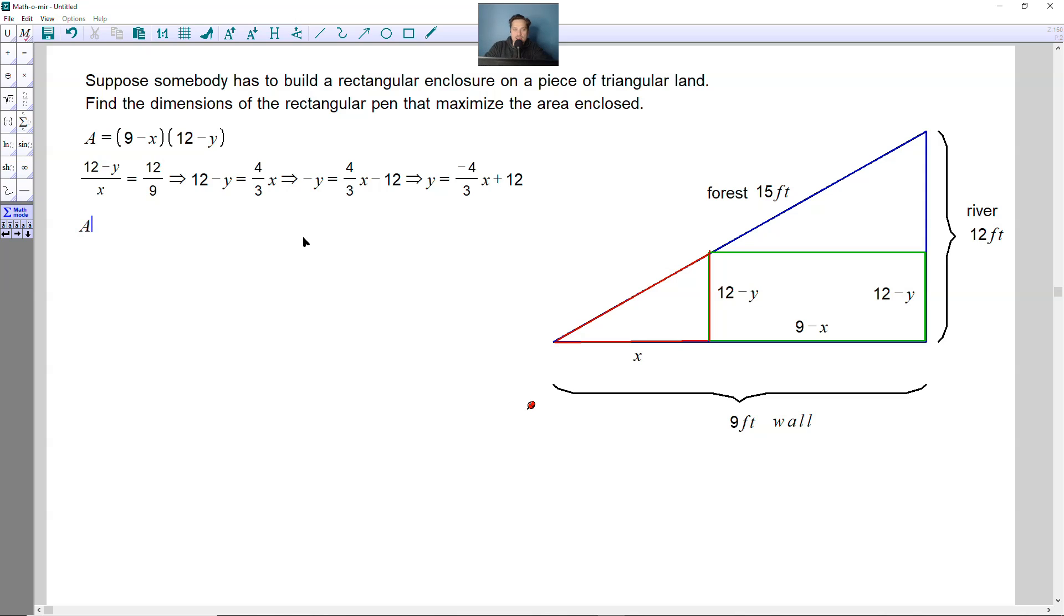So now we have an expression for y in terms of x. Go back and remake the area. So area would be equal to 9 minus x, and then within brackets, because it's going to be a pretty big calculation, it's going to be 12 minus, and then you have to replace y. Well, y is equal to negative 4 thirds x plus 12, so stick that in here.